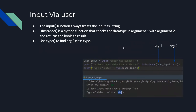The input function always treats input as a string. isinstance() is a Python function that checks the data type of argument one against argument two and returns a Boolean result. The first value is what you want to check, and the second argument is the data type you want to check it against — returning true if it matches and false if it doesn't. You can also use the type() function to find the class type of an argument.